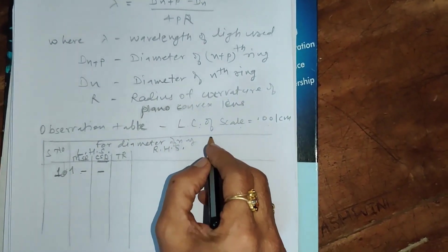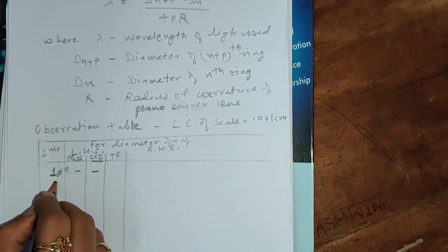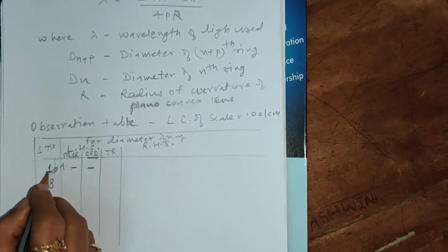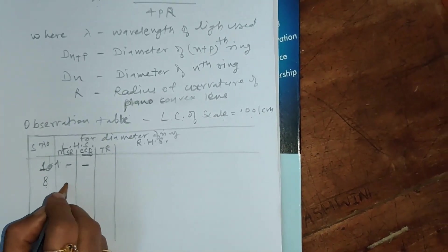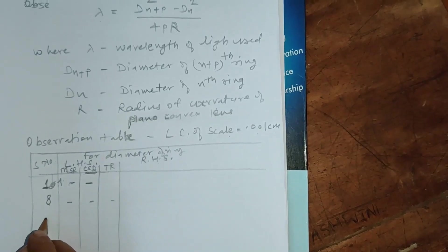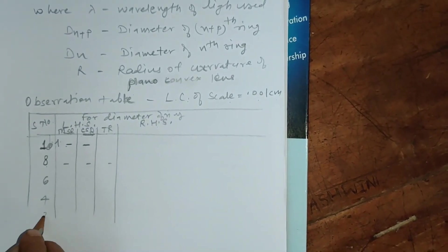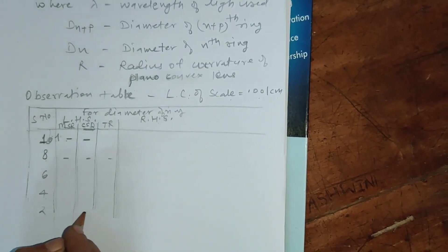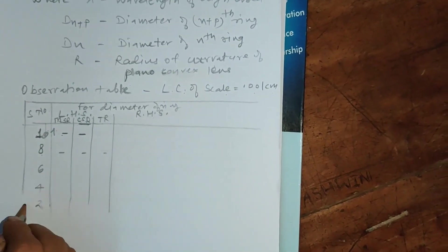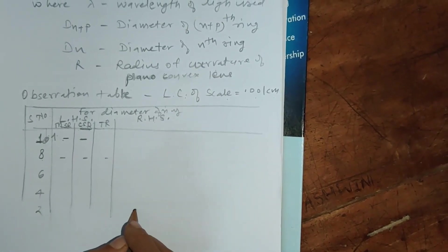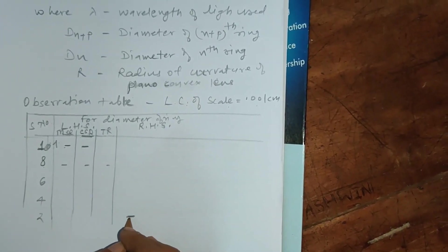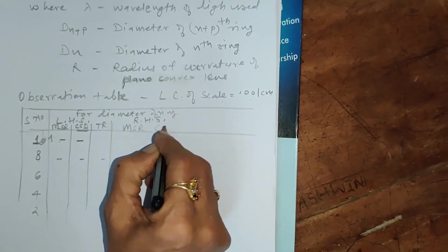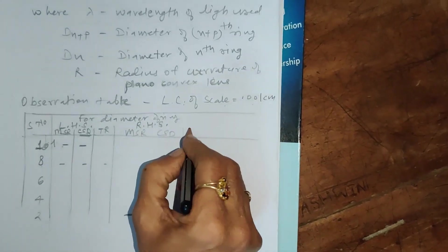In the same way, we go on coming towards the center of the ring — that is, from the 10th ring, then the 8th ring, then 6th, 4th, 2nd, then we come to the center. After crossing the center, we come to the right-hand side, where we shall get the reading for the 2nd ring on the right-hand side — main scale reading, circular scale division, and total reading. Then continue travelling towards the right-hand side to get the next successive readings: 4th ring, then 6th ring, 8th ring, and 10th ring.